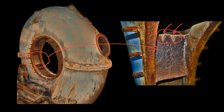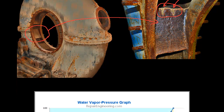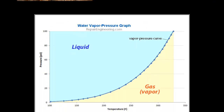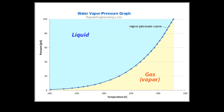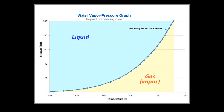In order to understand how a moving fluid can cause the type of damage we have seen in these examples, it is helpful to review a few basics of fluid dynamics. This graph is known as a vapor-pressure graph. A vapor-pressure graph shows the relationship between the temperature and pressure of a fluid. This particular graph is produced from data that is specific to water.